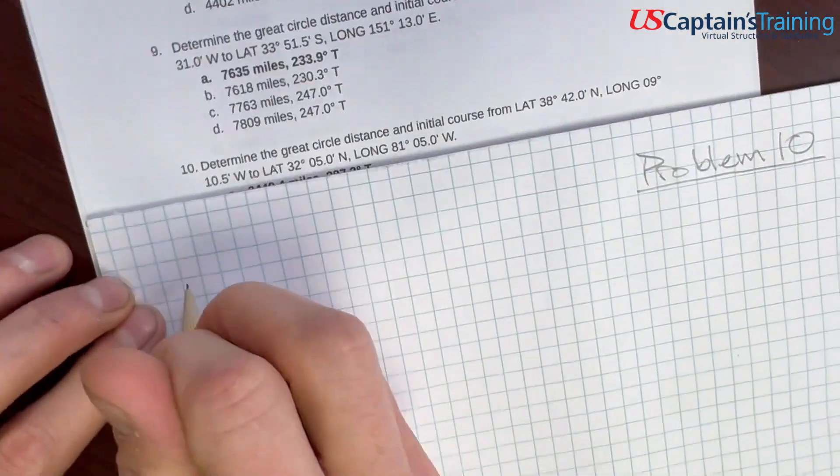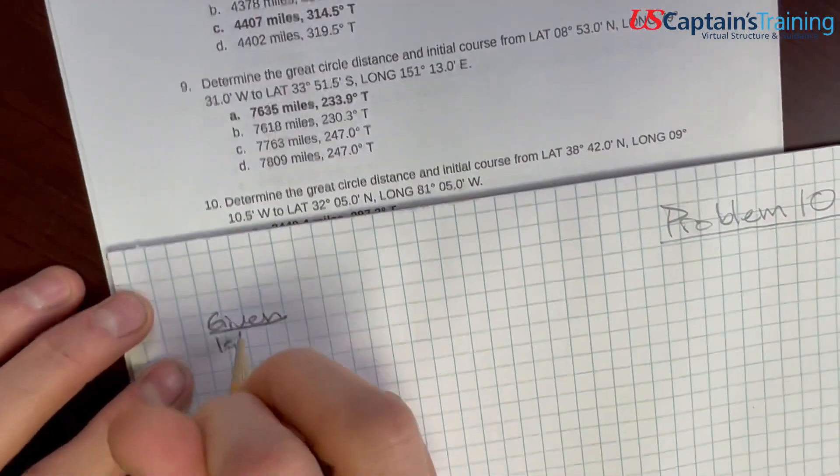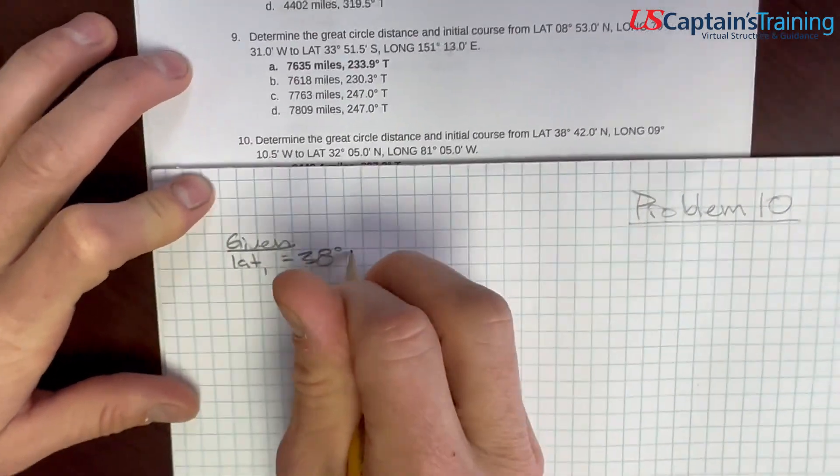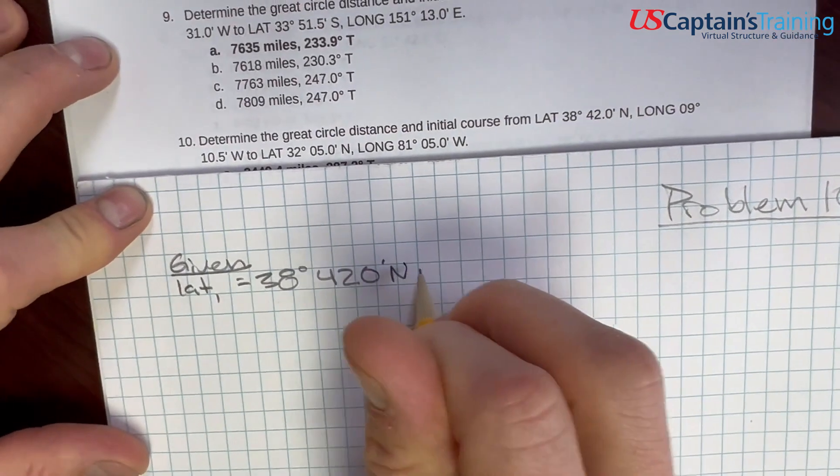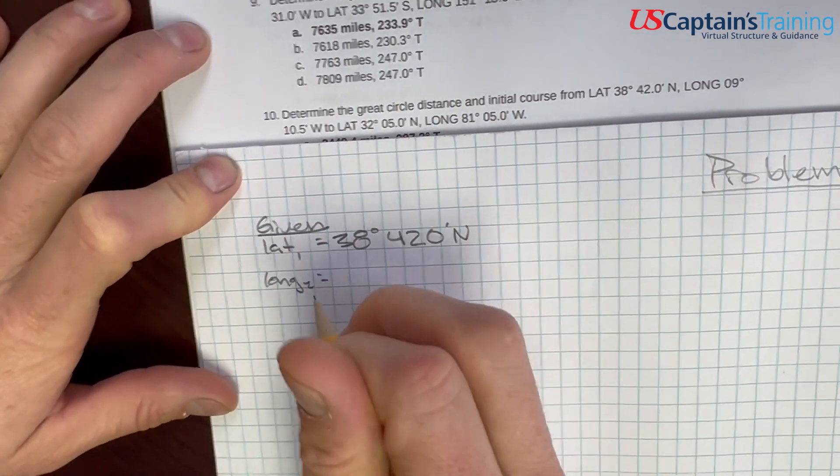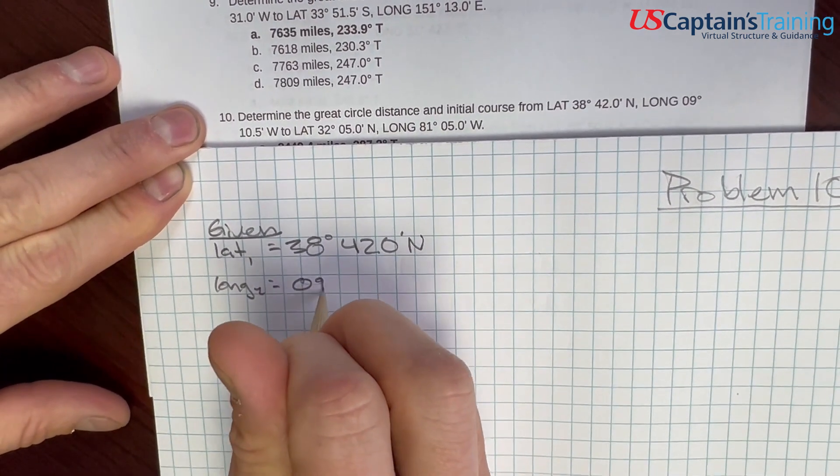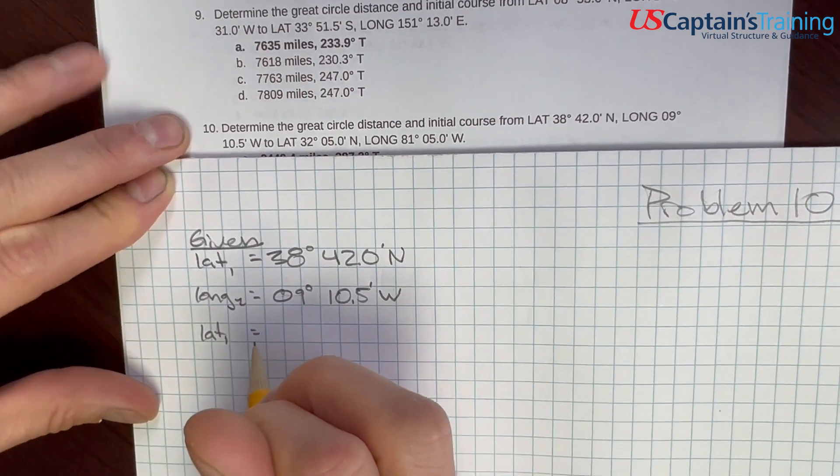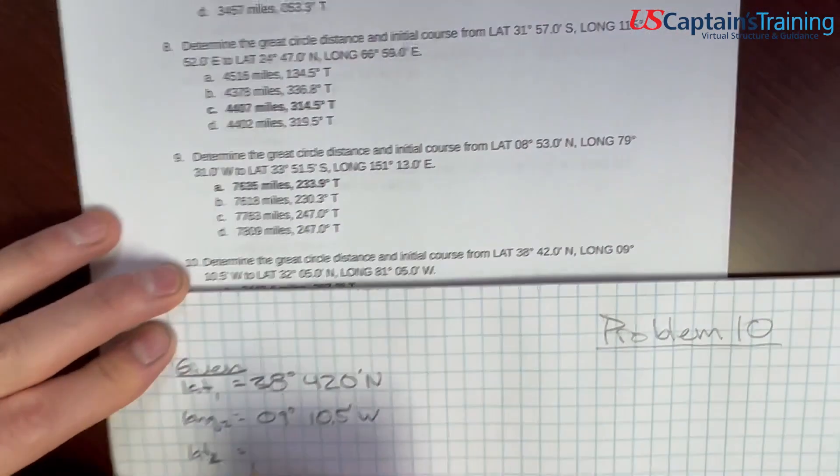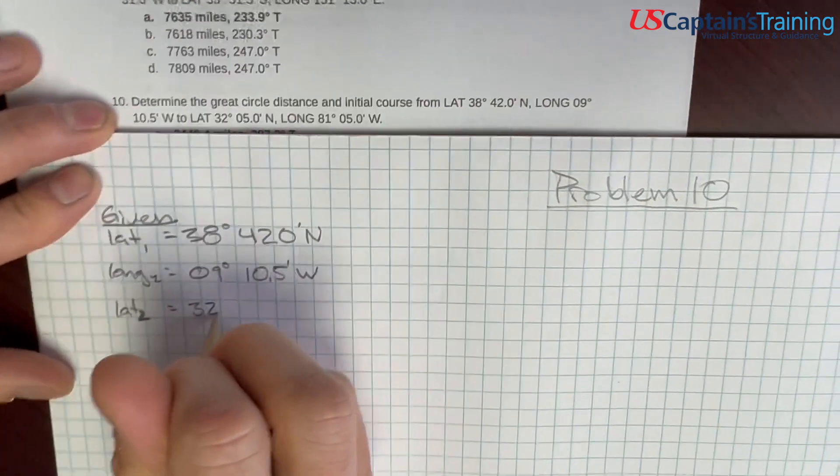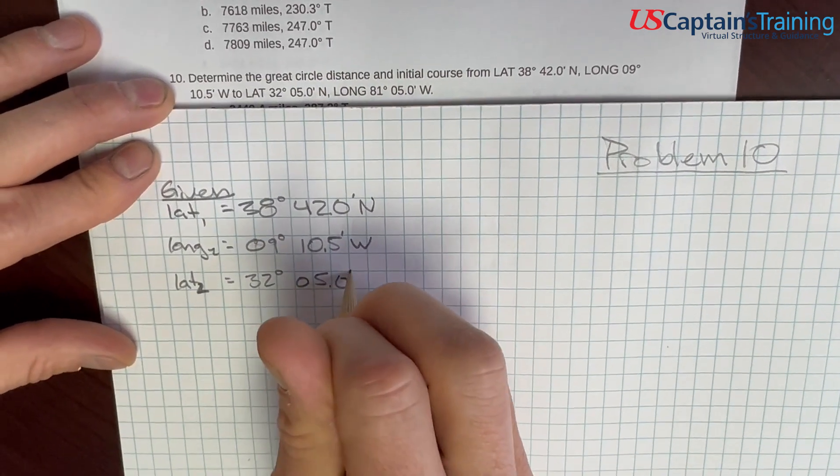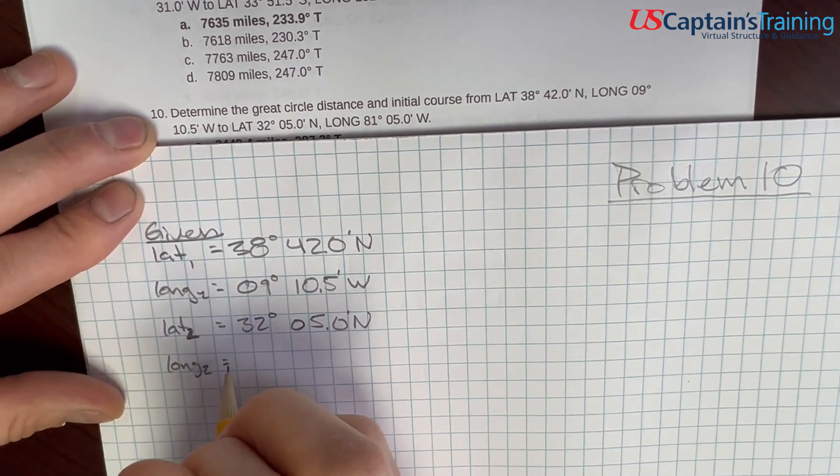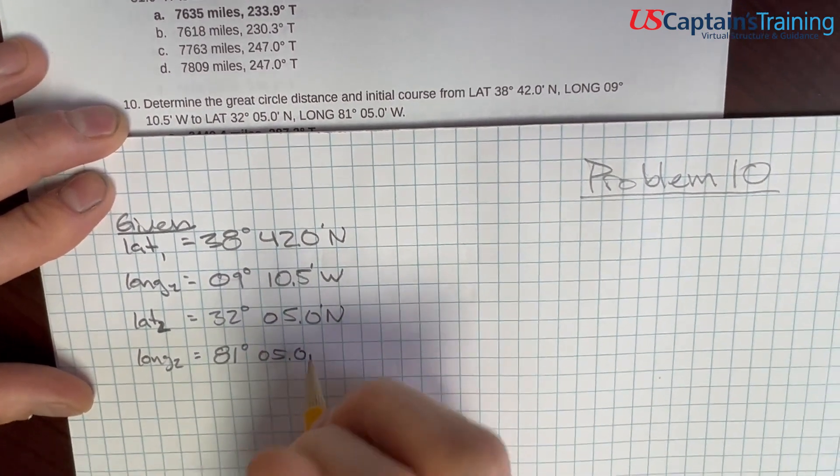Great circle distance and initial course, Practice Problem 10, last one in the set. Let's check this out. In the problem, we are given two coordinates. Let's record those. Given: Lat 1 equals 38°42.0' north, Long 1 equals 9°10.5' west, Lat 2 equals 32°05.0' north, and Long 2 equals 81°05.0' west.